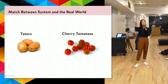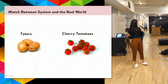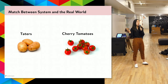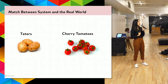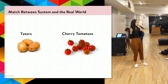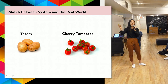Match the system to the real world — use language your users already know, like calling potatoes 'taters' if that's what your users say, or using real names like 'cherry tomatoes' instead of 'objects' or 'instances.' This helps people feel like the product is catered directly to them. Designing technical products is a challenge because terms like 'assets,' 'nodes,' and 'asset graphs' mean nothing to many users.